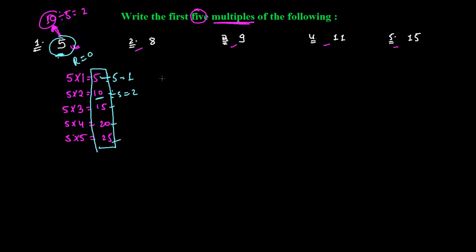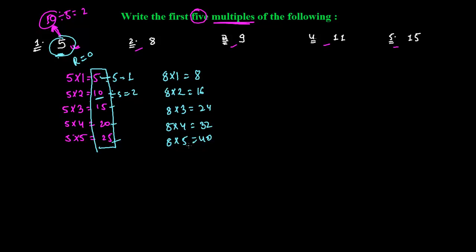For multiples of 8: 8×1=8, so 8 is the first multiple of 8. 8×2=16, 8×3=24, 8×4=32, 8×5=40. So 40 is the fifth multiple of 8. These are the first five multiples of 8.